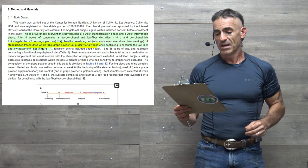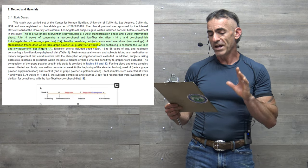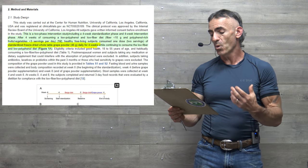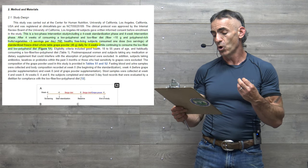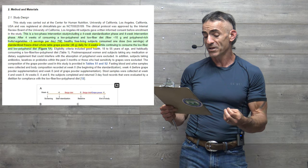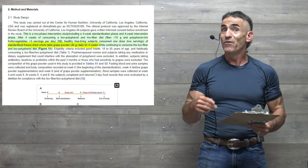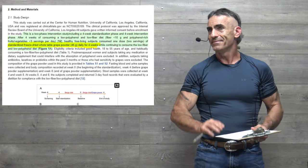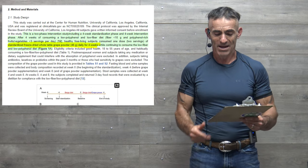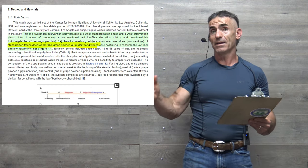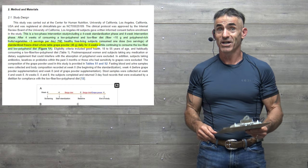The study design: this was a two-phase intervention study, including a four-week standardization phase and a four-week intervention phase. After four weeks of consuming a low polyphenol and low-fiber diet, keep in mind before they went into the grape trial, you have individuals consuming less than 10 grams of fiber a day.